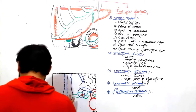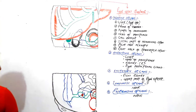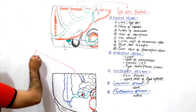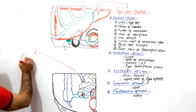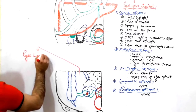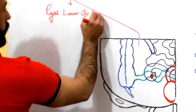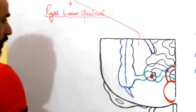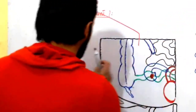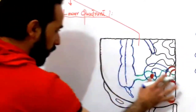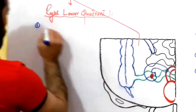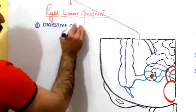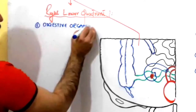So let us see about the structures present in the right lower quadrant of your abdominal cavity. This is our right lower quadrant. What structures are found here? We divide the structures into groups. The first group of organs are the digestive organs — which digestive organs are present in the right lower quadrant?